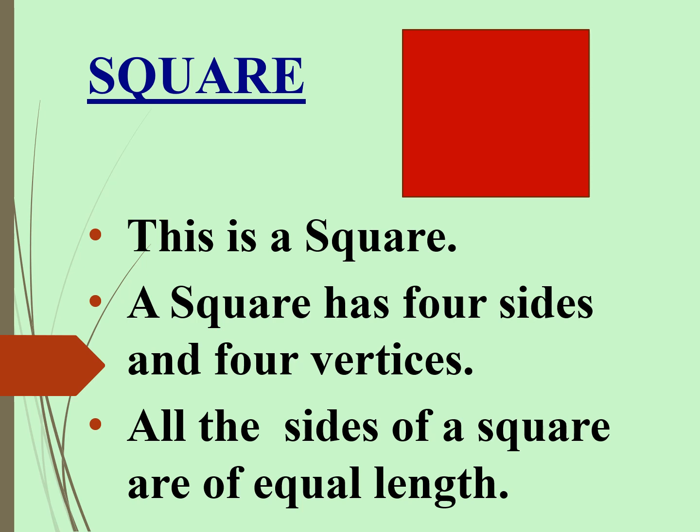Triangle: This is a triangle. A square has four sides and four vertices. All the sides of a square are of equal length.